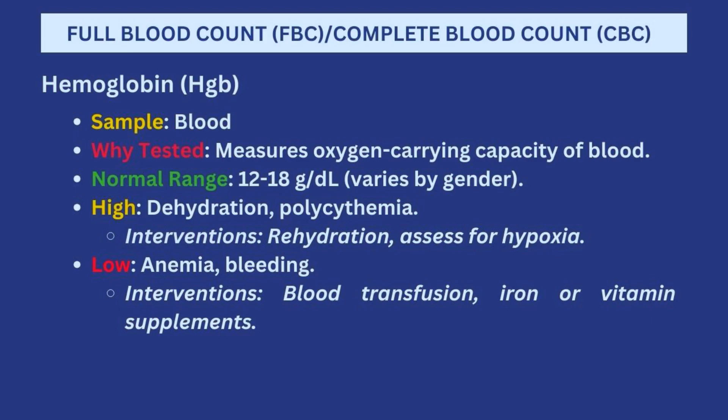The sample is obviously blood, and it is tested because you want to measure the oxygen-carrying capacity of the blood. Normally it should be between 12 to 18 grams per deciliter based on gender. When the hemoglobin levels are high, it means that person is probably dehydrated and there's possibly a chance of polycythemia. In that situation you'll be expecting to rehydrate the patient either by increased oral fluid intake or IV fluids.